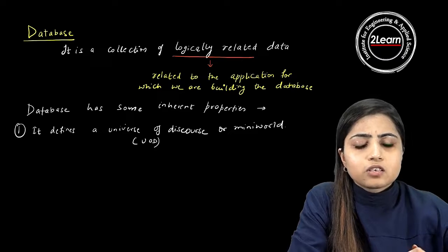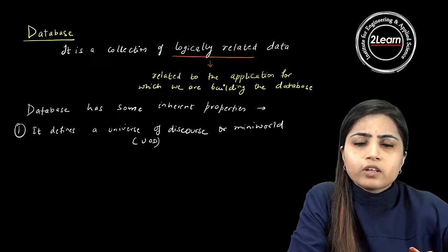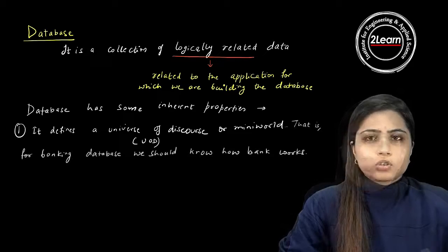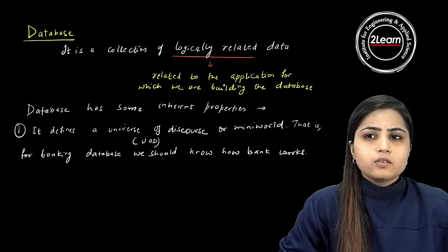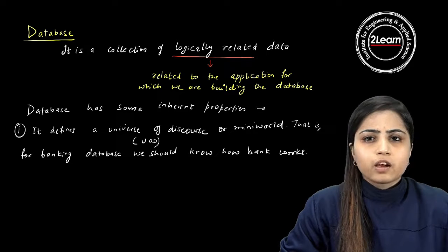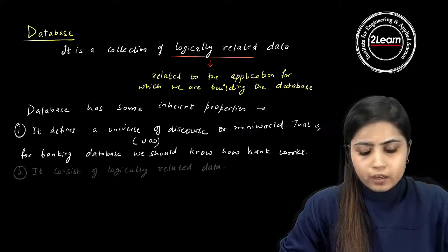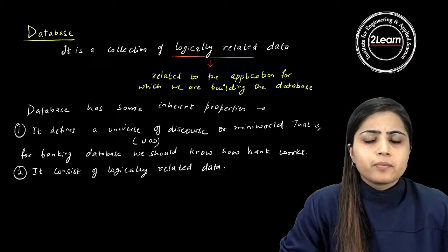Obviously, if a bank has 1000 features, you cannot include all of them in your database. But the important features — customers depositing amounts, withdrawing amounts, checking balances — these are the important functioning aspects of how the bank works, and you specify all of these in your database. This is why we call it mini world: it defines the universe of discourse, representing how the application actually works in the real world.